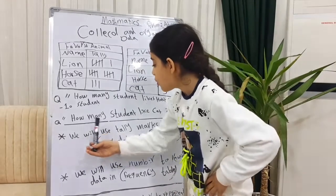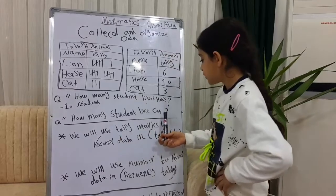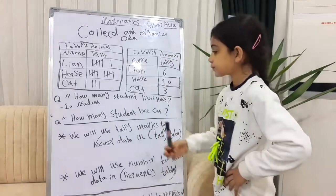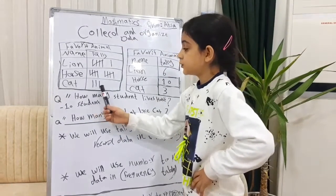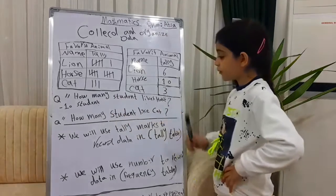For example, how many students like cats? One, 2, 3. Number 3. Cats.